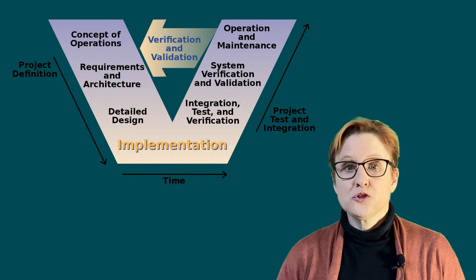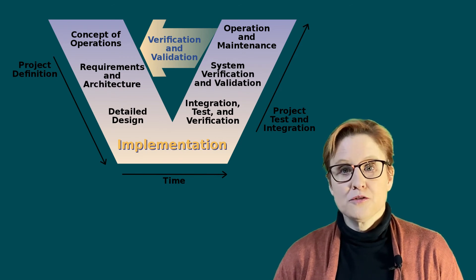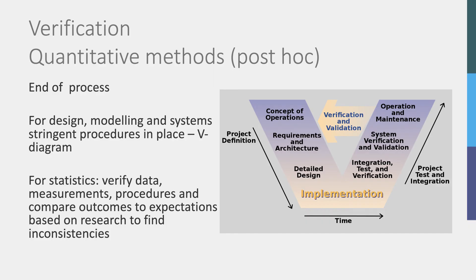In terms of verification, there are also different approaches between quantitative and qualitative research. In quantitative research, verification can have different forms. In design, computational modelling and computerised systems, there are often stringent procedures in place depending on the area you are operating in. This is where the industry verification V-diagram stems from. Similar verification procedures exist for computerised systems and models. When verifying outcomes of statistical analysis, it is important to verify the data, such as checking for outliers, verifying that you have used the methods correctly in measurement and analysis, and that you have carried them out properly.